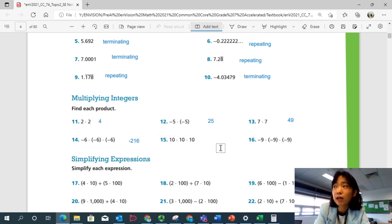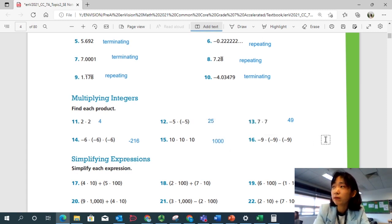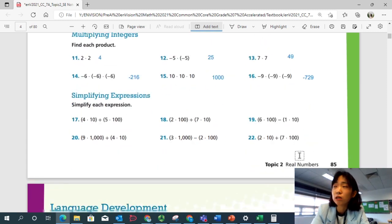10 times 10 times 10. 10 cubed is a thousand. And number 16. Negative 9 times negative 9 times negative 9 should be a negative 729. Check your answers.